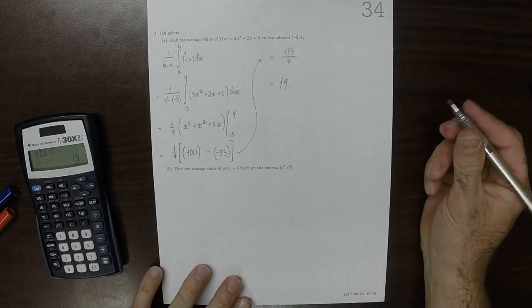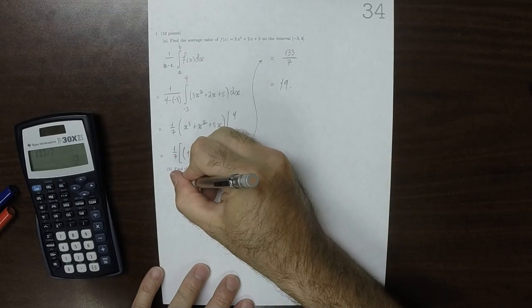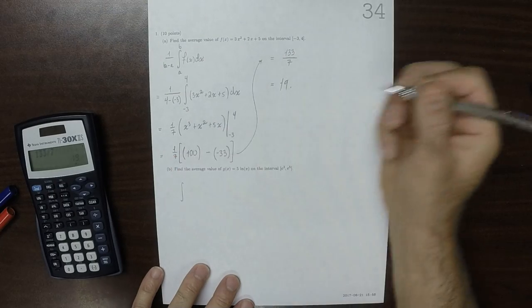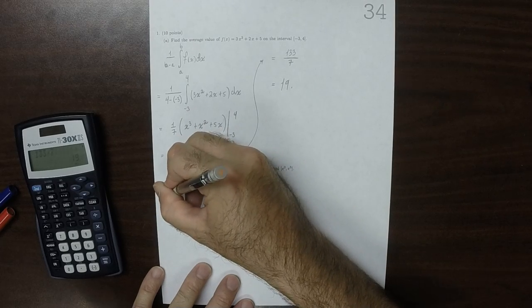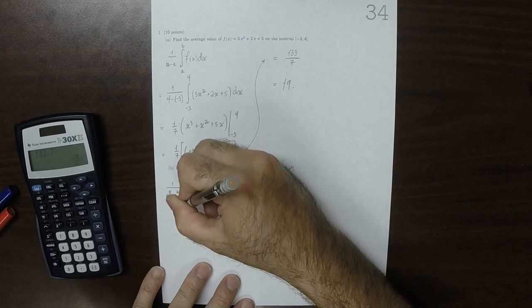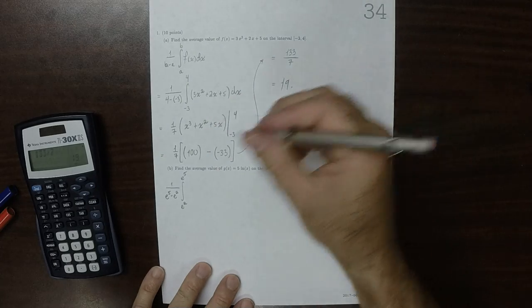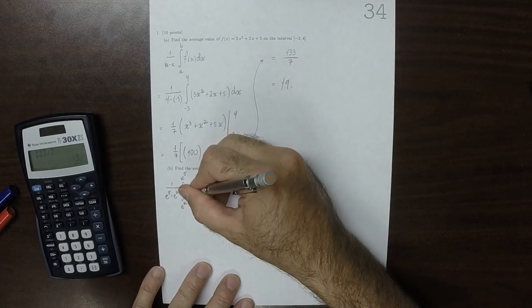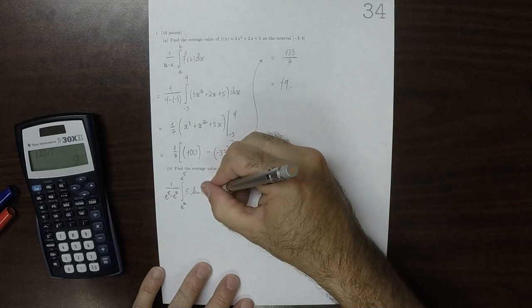Okay, part B is quite similar. So it will be 1 over e to the 5 minus e to the 2, integral from e squared to e to the 5, and then 5 log x dx.